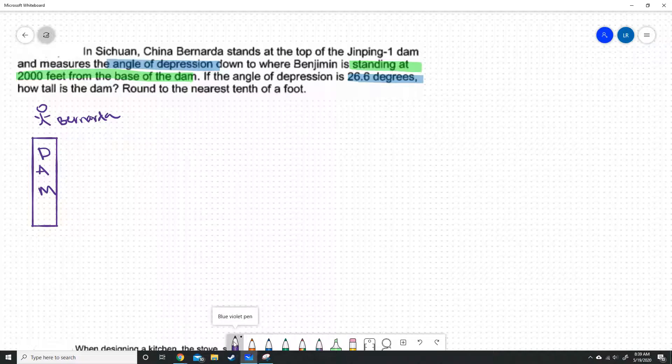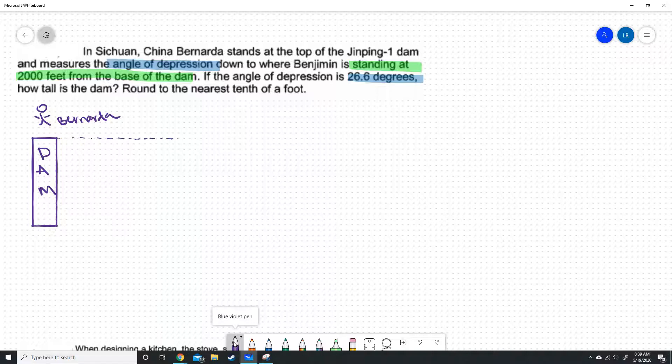Bernarda is standing on top of the dam. She measured the angle of depression from the top of the dam down to Benjamin to be 26.6 degrees. The angle of depression is as if I had a straight line here, and it's imaginary. The angle of depression is the amount that it angles downward.